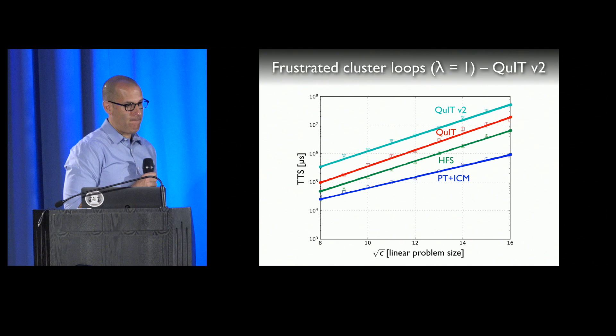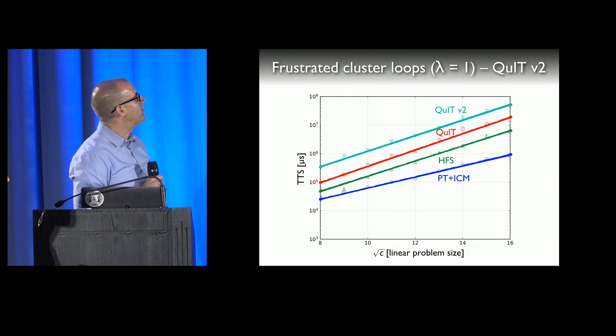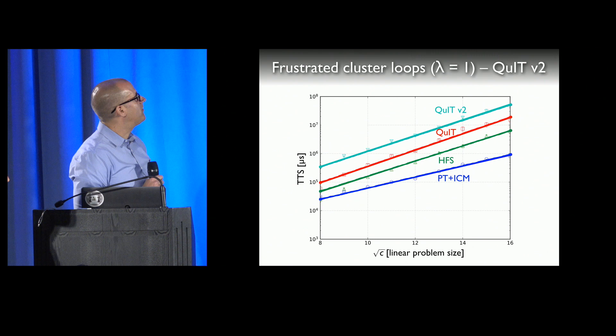Question from audience: Can you go back to the slide with QuIT v1, QuIT v2, and HFS performance graphs? You said QuIT v2 was a little bit better — but isn't the time to solution longer? Yes, but the scaling is better, so the slope of the graph is a little bit better. If I were to grab that line and drag it down you would see it clearly.